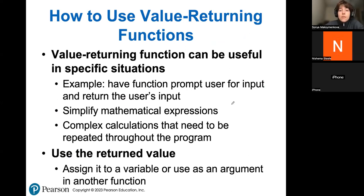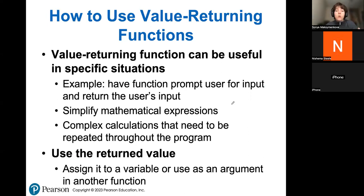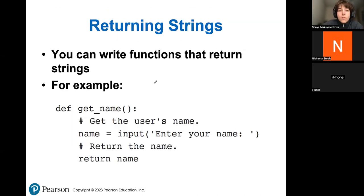You would use value returning functions when you need to get some input from the user — the user gives input and you can return that input back into your main program to use later. Also, to simplify mathematical expressions: if you need to make difficult calculations, you can separate the big calculation into smaller parts, use functions to return each value, and call the next function. You can return any sort of data back to your program — a Boolean variable, a string, an integer, a decimal — any data type that exists in your programming language.